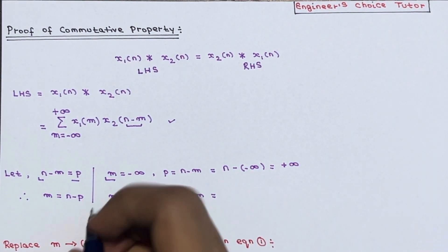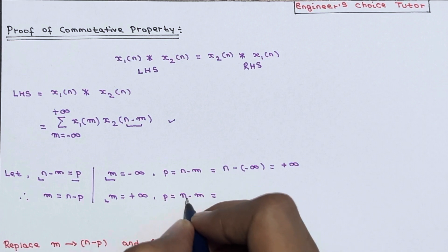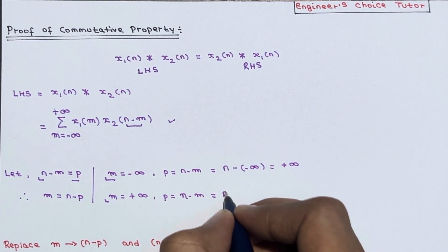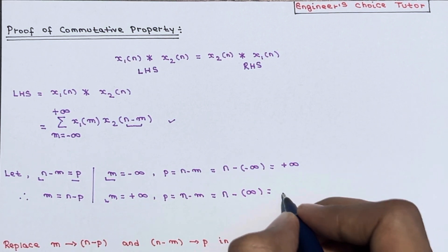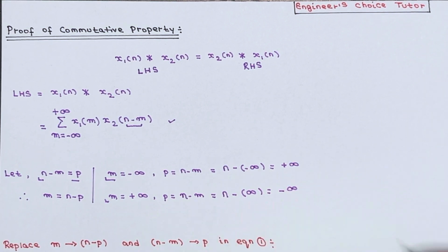Now when m is equal to plus infinity, p equals n minus m, so n minus infinity becomes basically minus infinity. Clear.